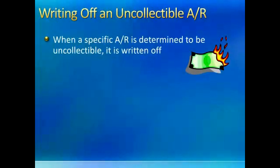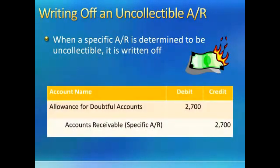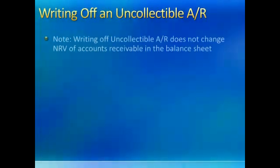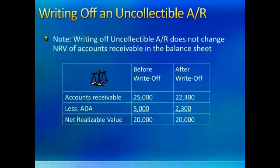When we write off an uncollectable accounts receivable, this is when we determine that a specific customer will not pay us and we decide to write that customer off. That means we're no longer going to keep this customer on our records in accounts receivable. When we do this, we debit the Allowance for Doubtful Accounts and credit accounts receivable. This affects two asset accounts but leaves the net realizable value of accounts receivable the same before and after the write-off.